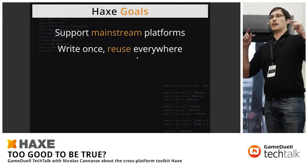One of the things we want to do is 'write once, reuse everywhere' — which is different from Java's 'write once, run everywhere.' For us, it's not about running everywhere, it's about reusing the code. The code you write in Haxe can be reused on different platforms. There are some guarantees that it will run the same, but you can also customize it for a particular platform.